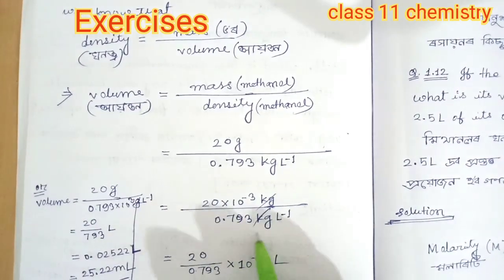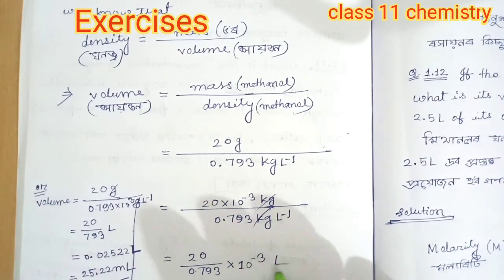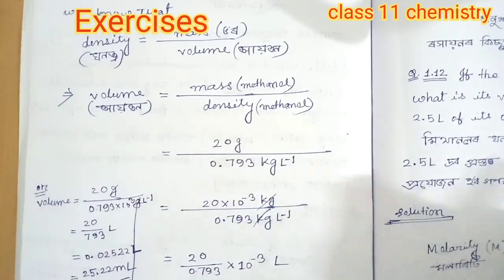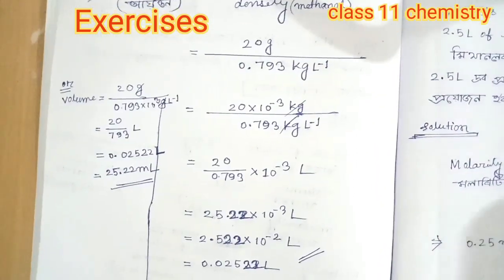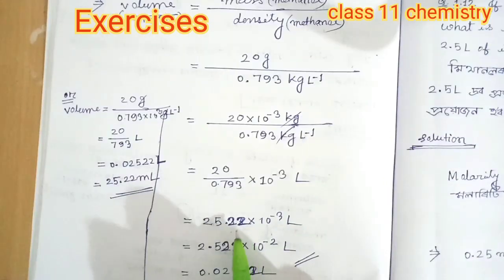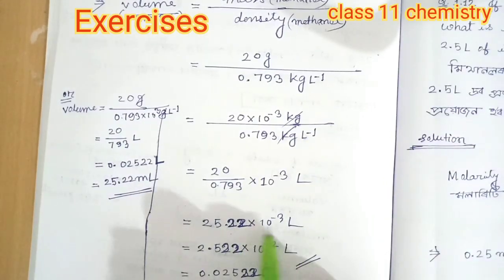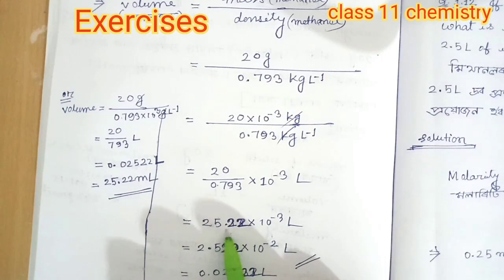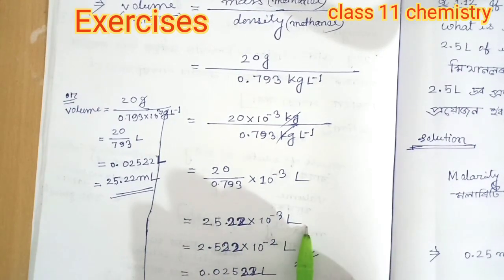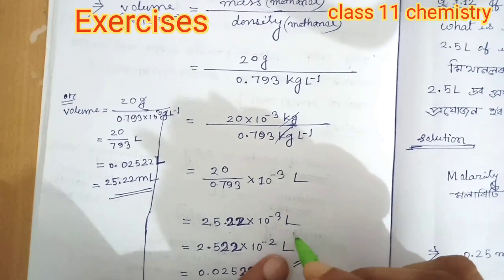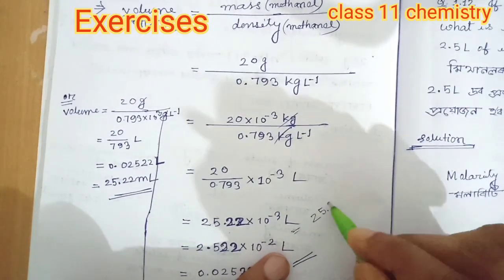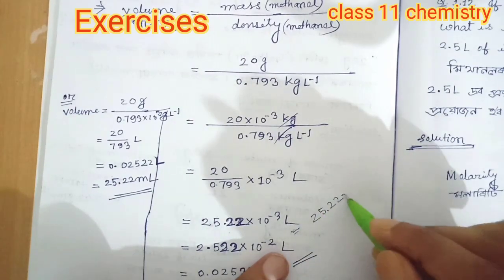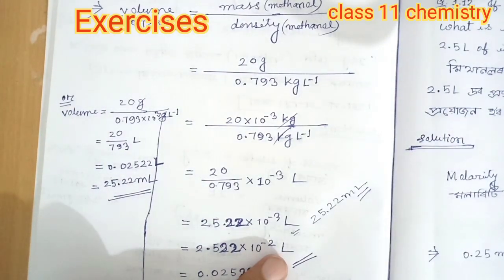After this, 20 divided by 0.9793 into 10 to the power liter — making this 20 divided by 0.9793 into 10 to the minus 3 liters. The media converts to milliliters — now about 25.22 milliliters. Convert this over to each unit.